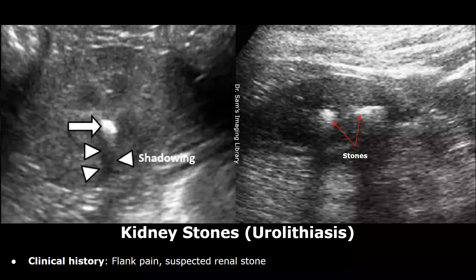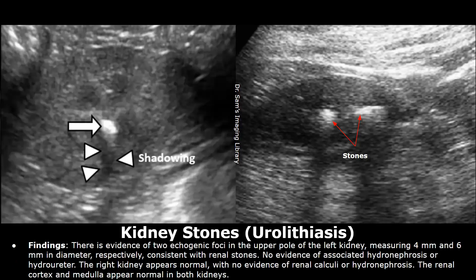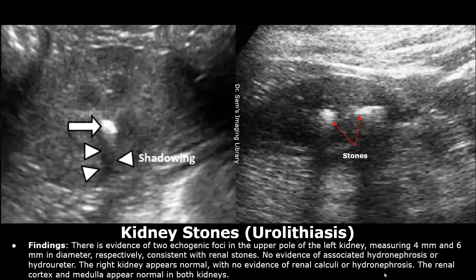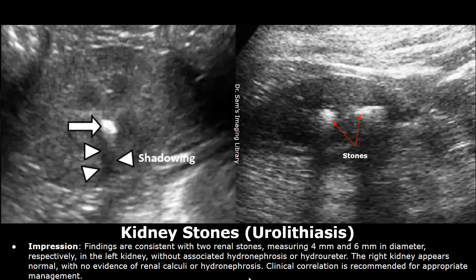This is a case of kidney stones. The clinical history was flank pain and suspected renal stone. These are the findings. There is evidence of two echogenic foci in the upper pole of the left kidney. There was no associated hydronephrosis or hydrouretor in this case. The right kidney was normal with no evidence of calculi or hydronephrosis, and the renal cortex and medulla appeared normal in both kidneys.